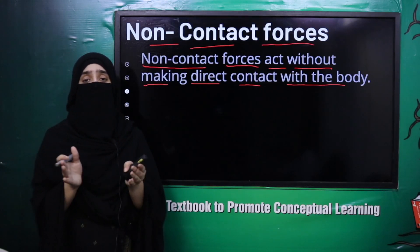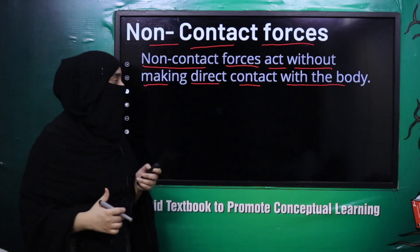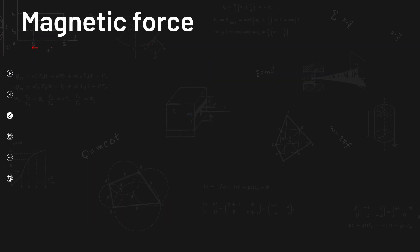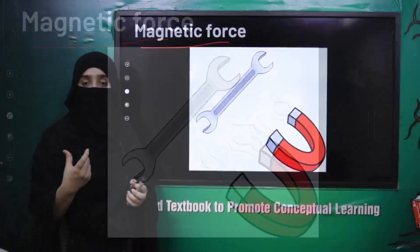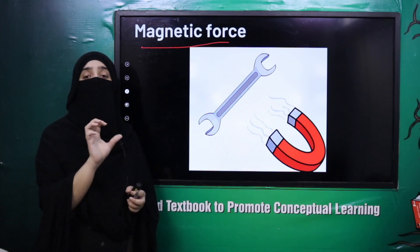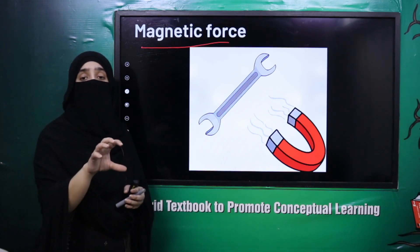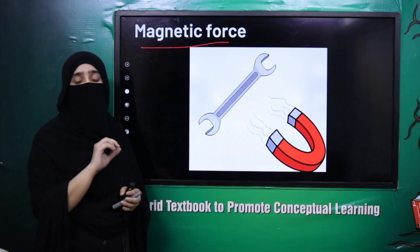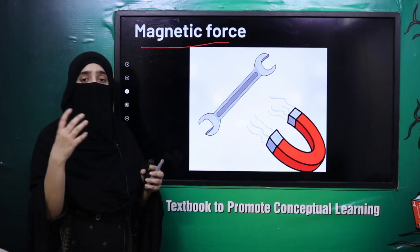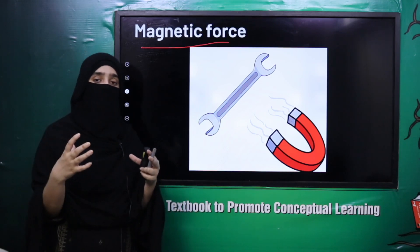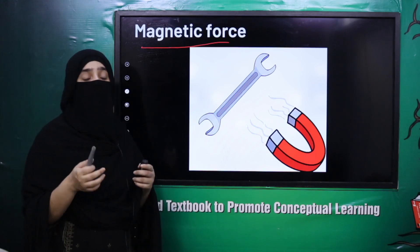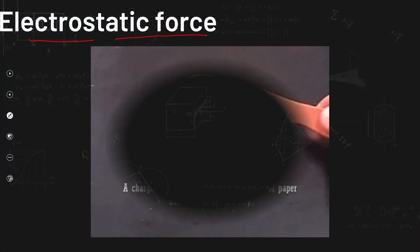Now, what are non-contact forces? These are forces where two bodies do not directly come into contact, but force is still applied and motion occurs. The first is magnetic force — magnets attract magnetic bodies like iron toward themselves. A force is applied on the iron objects, causing motion toward the magnet. Magnetic force acts without any connection between the magnet and the iron objects — no direct connection, yet force is applied. So this is a non-contact force.